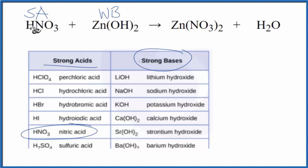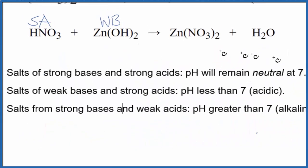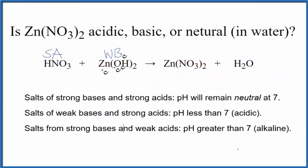So now that we know we have a strong acid and a weak base, we can use the rules to figure out whether Zn(NO3)2 is acidic, basic, or neutral when it's dissolved in water. So we're looking for a strong acid and a weak base. Here is a weak base and a strong acid. So when they react in this neutralization reaction,